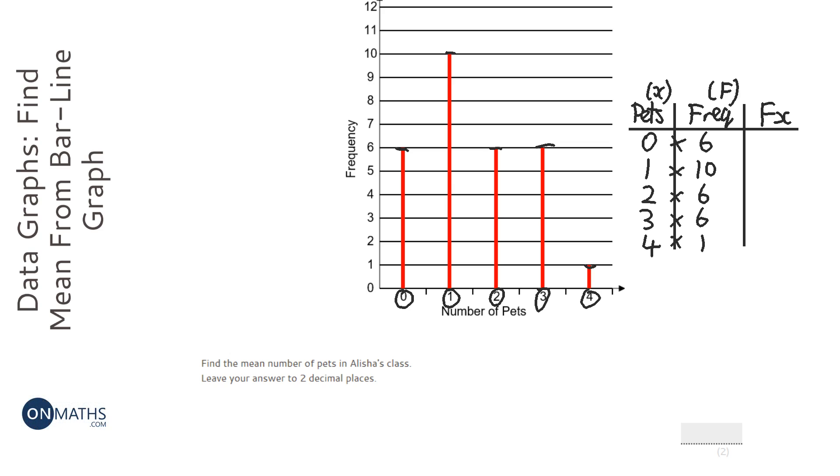So, it's just a way of finding out those 6 that were 0, well, how many is that in total? That's 0. Those 10 that had 1 pet, how many pets is that in total? 10. Those 6 people who had 2 pets, well, 2 times 6 is 12. There were 6 people with 3 pets, so that's 18 pets altogether. And there was one person with 4 pets, so that's 4 altogether.